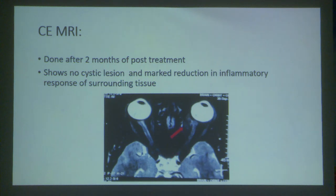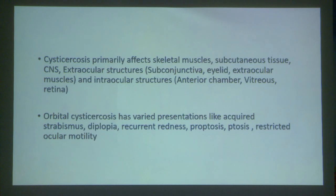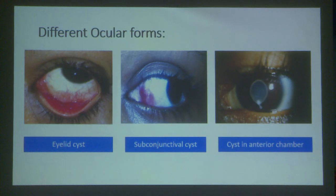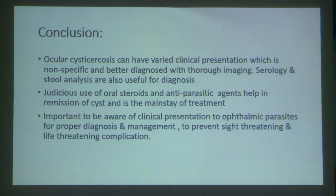Inflammation incited by the dead parasite was managed with topical steroids. On follow-up, the patient improved gradually with marked improvement of clinical signs. Post-treatment photograph at one month follow-up showed resolution of inflammation and extraocular motility was full and free in all gazes. Contrast MRI done two months post-treatment showed no cystic lesion and marked reduction in inflammatory response. To conclude, orbital cystic cysticercosis can have varied clinical presentation, is best diagnosed with imaging, and judicious use of oral steroids and anti-parasitic agents helps in remission of cysts. Treatment is important to prevent sight-threatening and life-threatening complications.